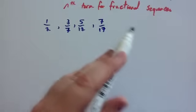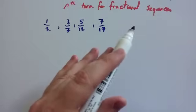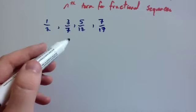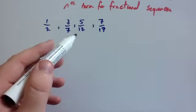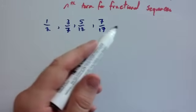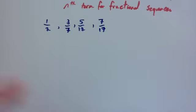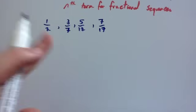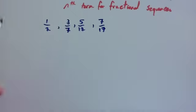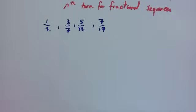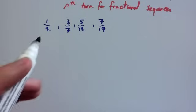We're now going to look at working out the nth term for fractional sequences. So here I've got a sequence: a half, three-sevenths, five-twelfths, seven-seventeenths, and so on. We've been asked to work out the nth term for this. To work out the nth term for a fractional sequence, what you need to do is consider the top line and the bottom line separately — the numerators and the denominators separately.